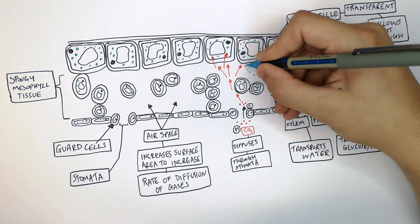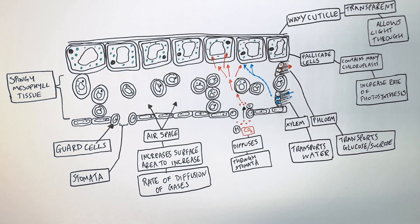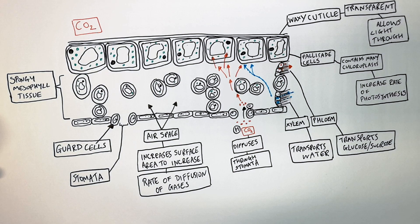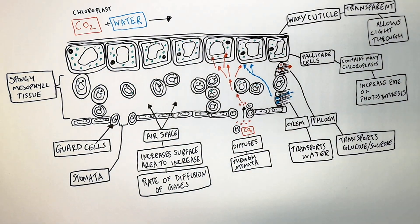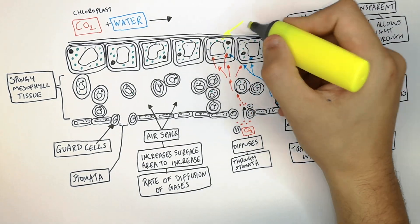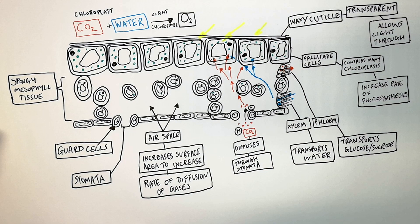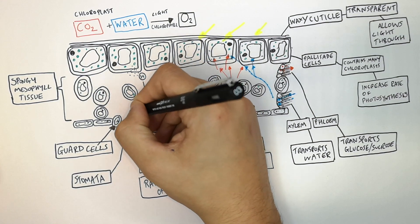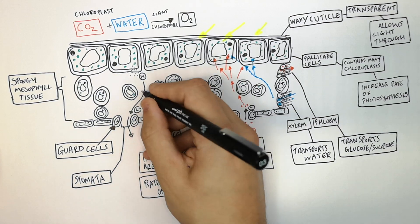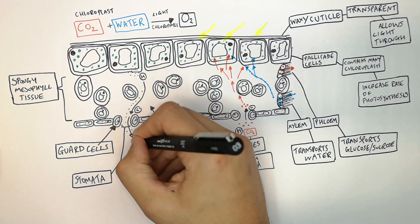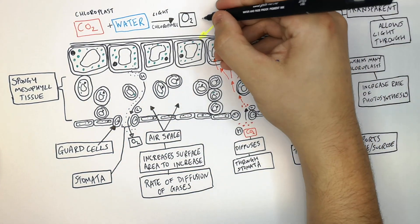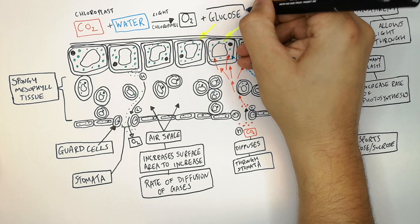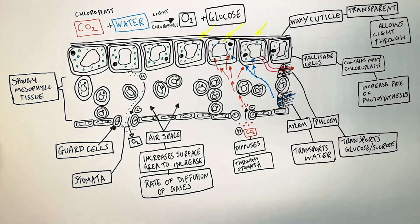Water enters the airspace of the leaf via the xylem and it too will diffuse to the chloroplasts in the palisade cells. Photosynthesis takes place in the chloroplasts whereby CO2 from the atmosphere reacts with water. Light hits the chlorophyll in the chloroplast to give energy to produce oxygen. Oxygen then diffuses from the chloroplasts through the airspace and out of the stomata from a high to low concentration. Glucose is formed and transported away from the chloroplasts and the leaf via the phloem.